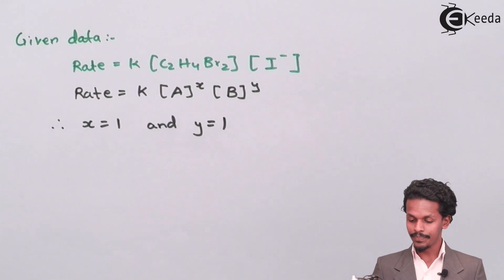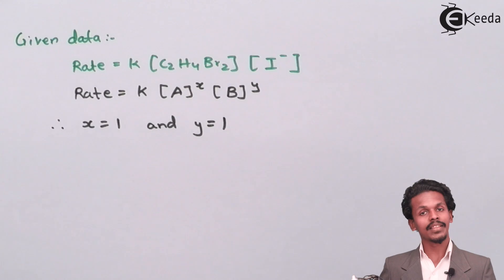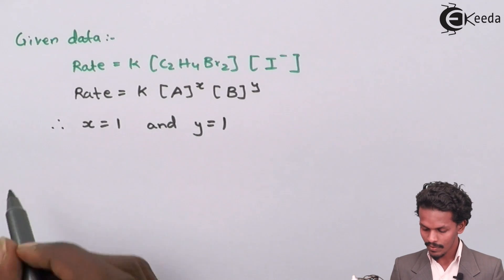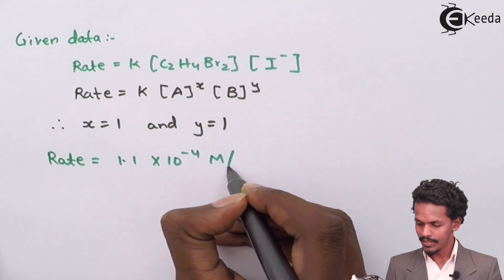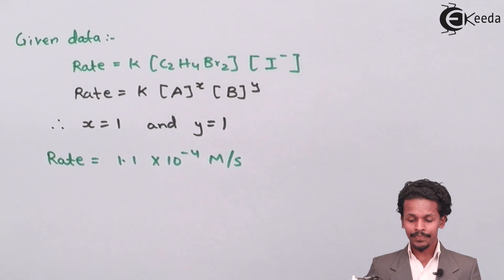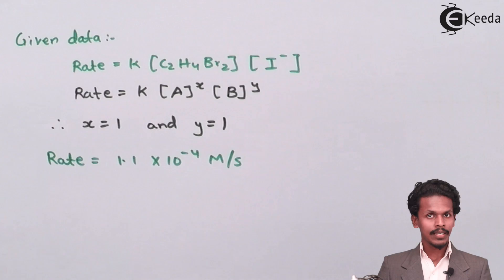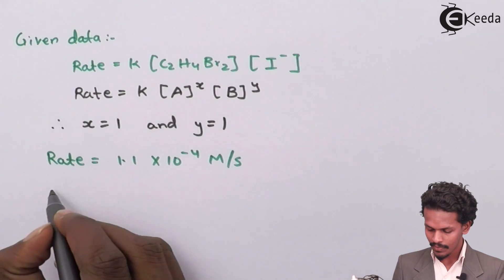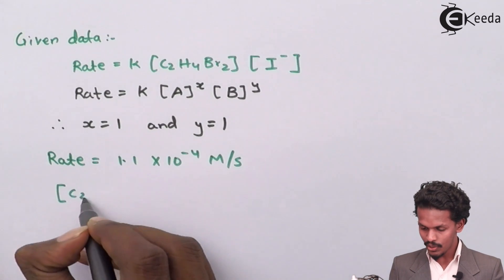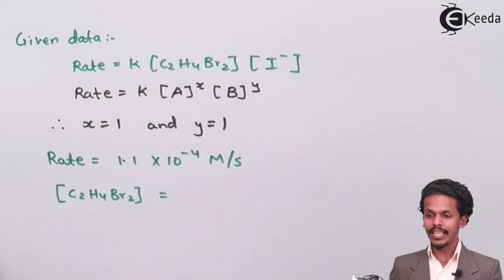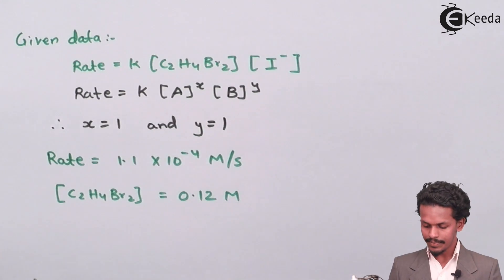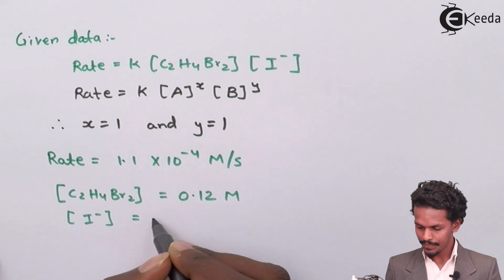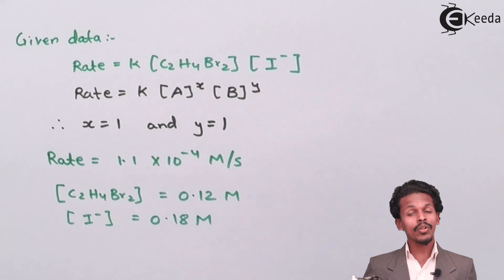The next data provided is that the rate of reaction equals 1.1 × 10⁻⁴ moles per second. The concentration of C2H4Br2 is given as 0.12 molar, and the concentration of I⁻ is given as 0.18 molar. Based on this data we have to calculate the value of K.